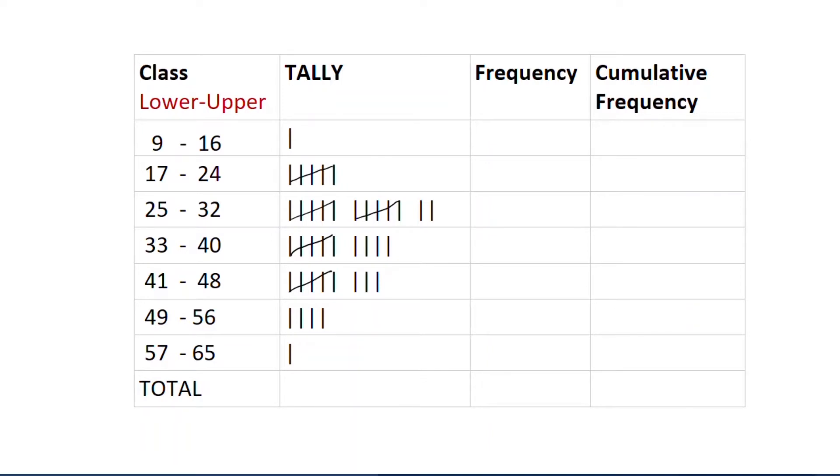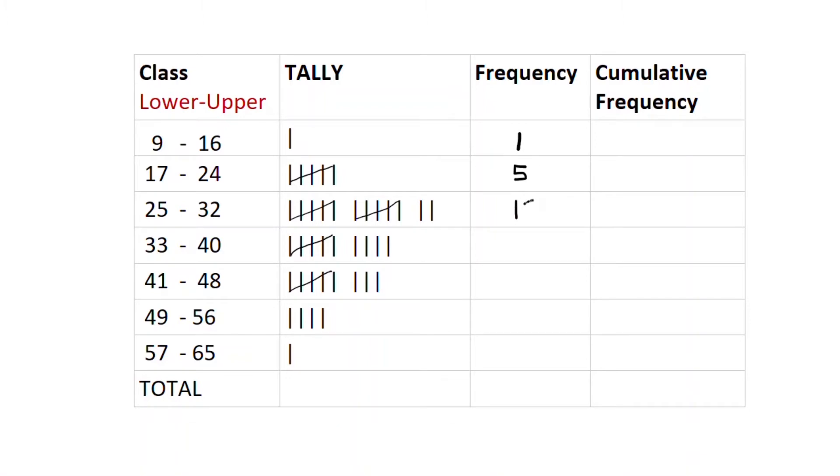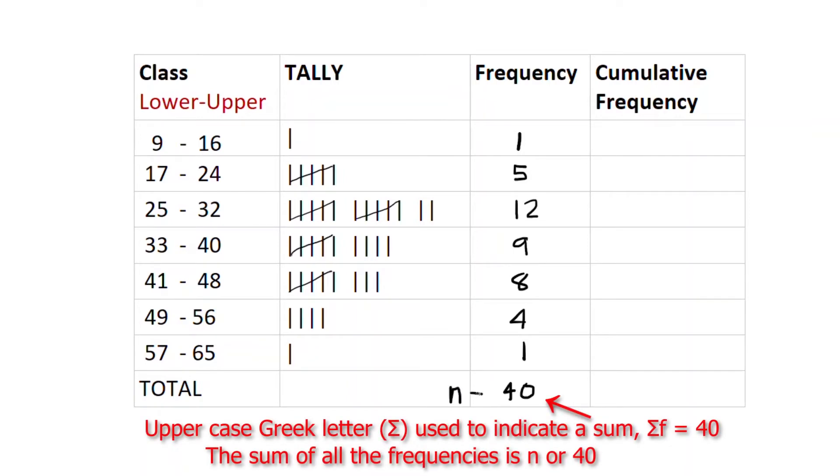Once we've tallied everything up, then we count the tallies. So this is obviously just one. Here we have five. And this adds up to 12, nine, eight, four, and one. And when we add all of the frequencies together, we know we had a total of 40 because we know that we had 40 data points. So n, our number in our sample, is 40.